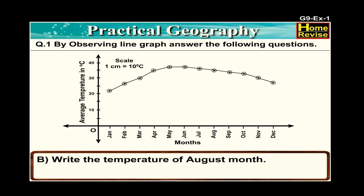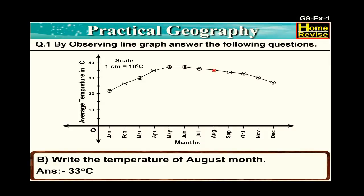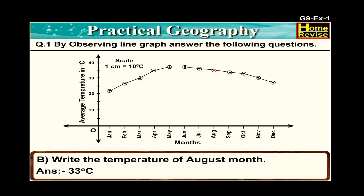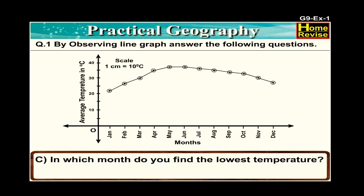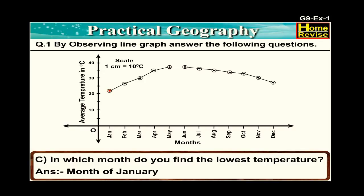Part b: write the temperature of August month. The temperature of August month is 33 degrees Celsius. Part c: in which month do you find the lowest temperature? In the month of January, you find the lowest temperature.